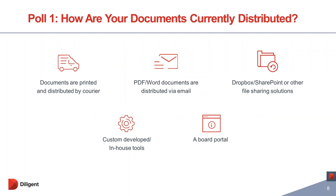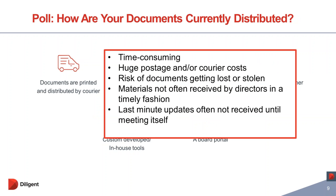I'm going to highlight the typical concerns we see with each option. If you are currently printing out documents and delivering by courier, it is fairly time consuming. An administrator needs to print and copy 200 pages for different board members and bind them before sending. Most of our clients tell us it took them up to two days to do this, and there is also a huge postage cost. Since most directors travel a lot, getting materials in a timely fashion is not always happening.